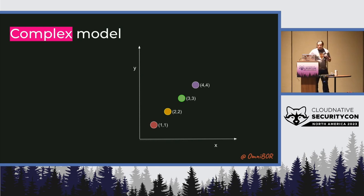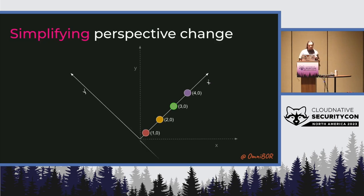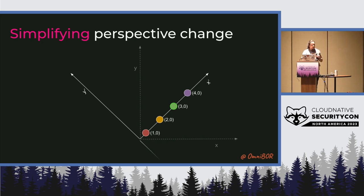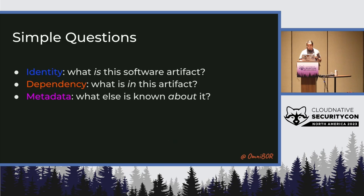There are different ways to look at the complexity of something. On a simple line graph, you might think you need two points, X and Y, to identify where something is. But if you change your perspective, you actually only need one number — you can angle yourself so that only one number identifies where things are. Part of what we're looking at is how we change our perspective in the software supply chain so we can simplify the problem further. That was part of what we were asking with Omnibore — we had something more complex and worked out that if we make it smaller, we get to the heart of what we want to do.